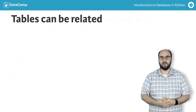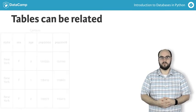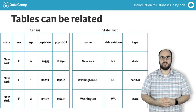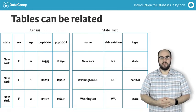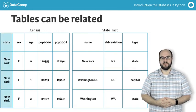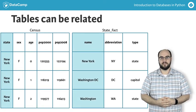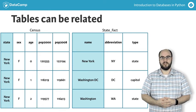Tables can also be related to one another by a column acting as a key or a bridge that tells it which piece of data it is associated with in another table. This feature is where relational databases get the relational part of their name. Here we've highlighted the state column in the census table and the name column in the state fact table. We can use this relationship to get additional information about the relevant state, such as its abbreviation for any row in the census table.